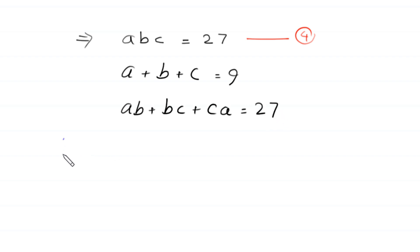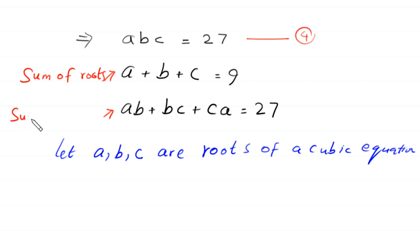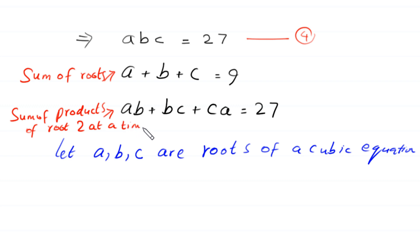Now, we suppose that a, b and c are roots of a cubic equation. So a plus b plus c is the sum of roots, ab plus bc plus ca is the sum of products of roots two at a time, and abc is the product of roots.